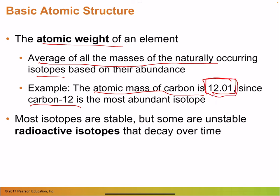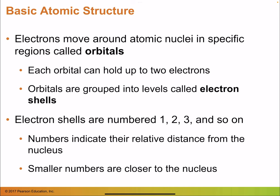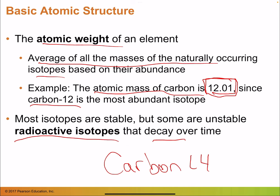Most isotopes are stable, but some are unstable and considered radioactive isotopes, which decay over time. Carbon-14 is an example — you can measure the amount of carbon-14 left in a fossil to determine its age. Radioactive isotopes will come up again specifically in biology when we get into evolution.